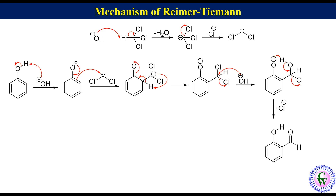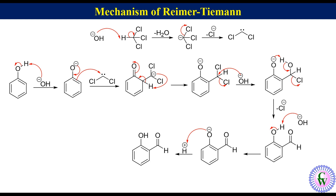Since hydroxide ion is present in the medium, it immediately abstracts the phenolic proton from salicylaldehyde to produce 2-formyl phenolate. Under acidic workup there is protonation to produce salicylaldehyde.